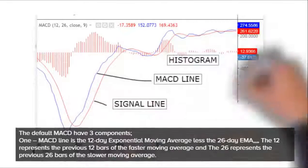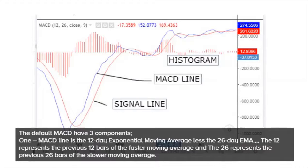The default MACD has three components. First, the MACD line. The MACD line is the 12-day exponential moving average less the 26-day EMA. The 12 represents the previous 12 bars of the faster moving average and the 26 represents the previous 26 bars of the slower moving average.